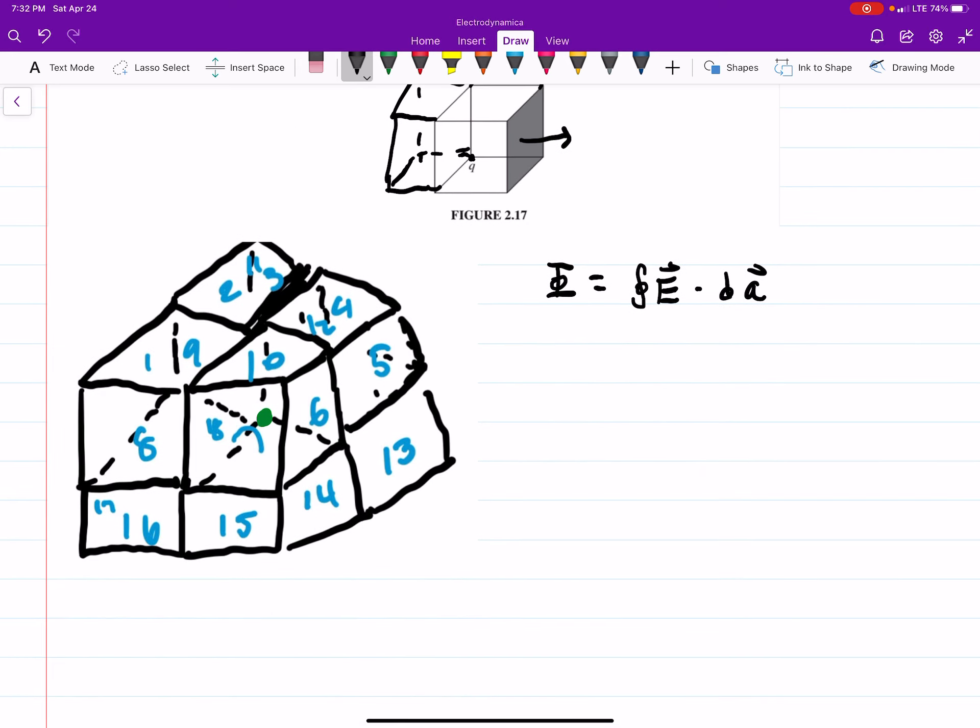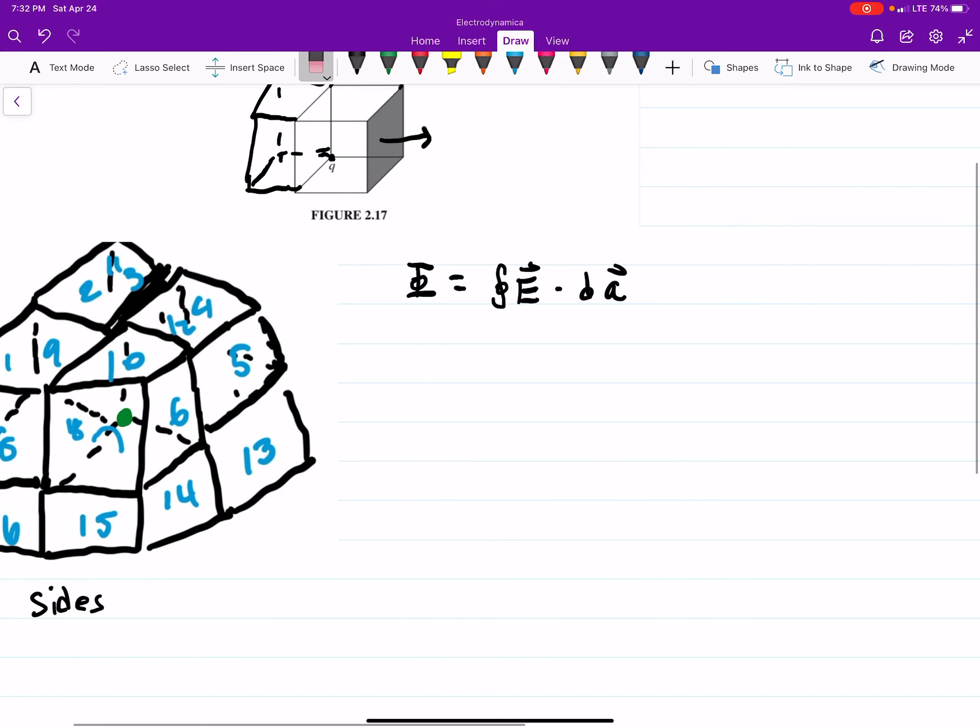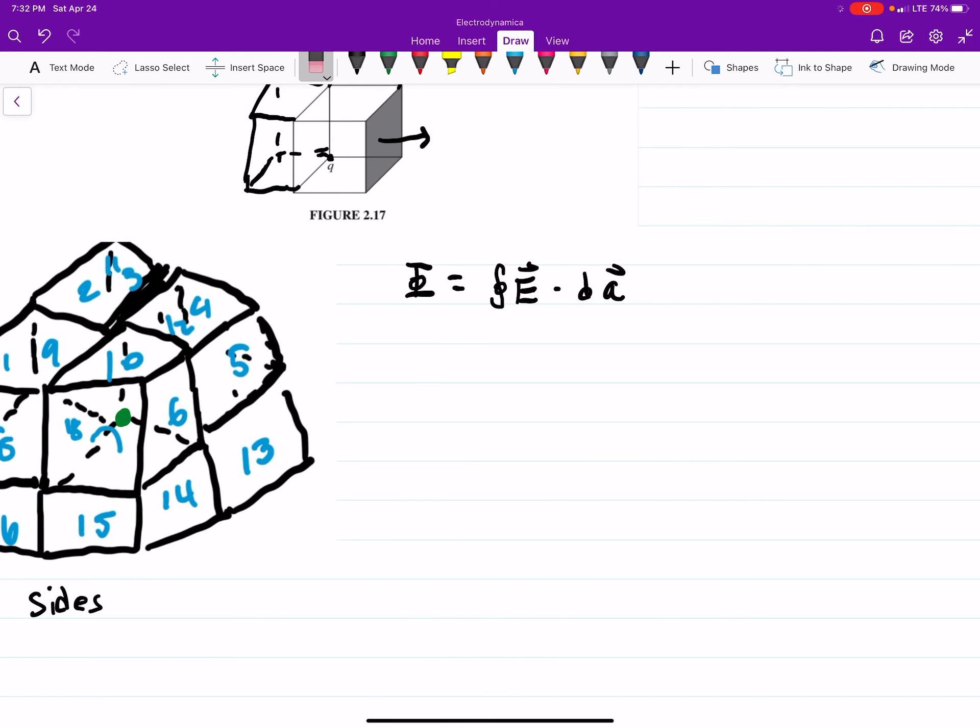Now if you count all these up, you should find that there are 24 sides of this bigger cube. So what we're going to do is we're going to find our total flux and divide it by 24, because of the 24 sides that we have now.